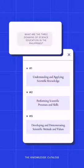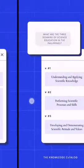If you noticed, the first domain is cognitive. The second domain is psychomotor. And the last domain is affective. So let's discuss them.